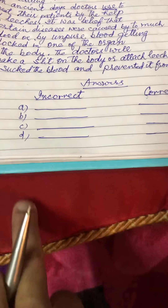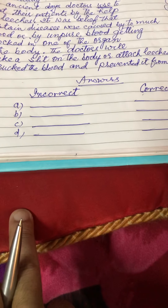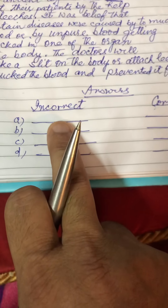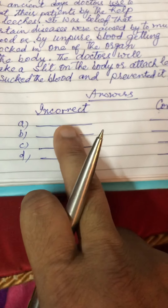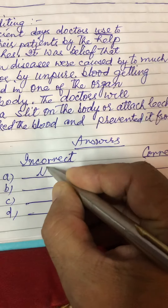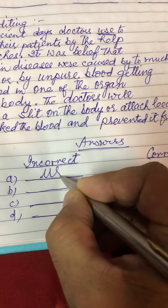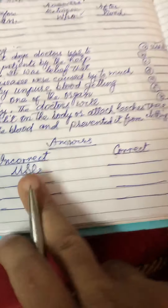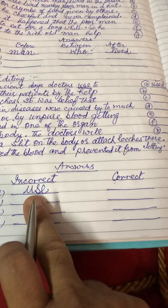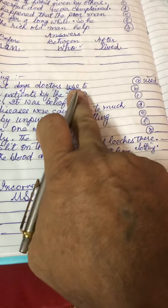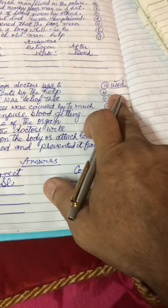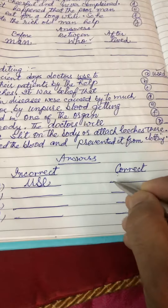The answers are labeled A, B, C, D, E, F, G, H. The first one is A. 'Is used' is the incorrect word — the correct word that should replace it is 'used'. You write: incorrect word, then the correct word beside it. The word was written in present tense but it should have been in past tense — that was the mistake.